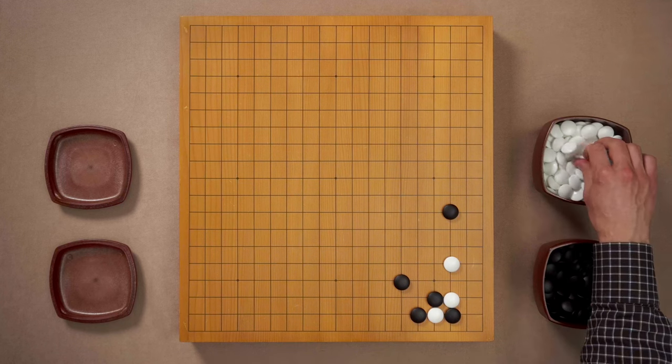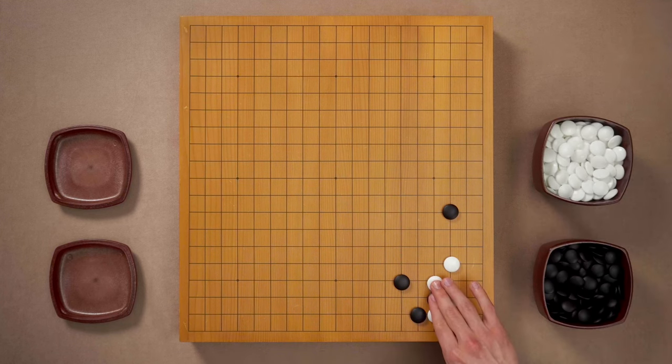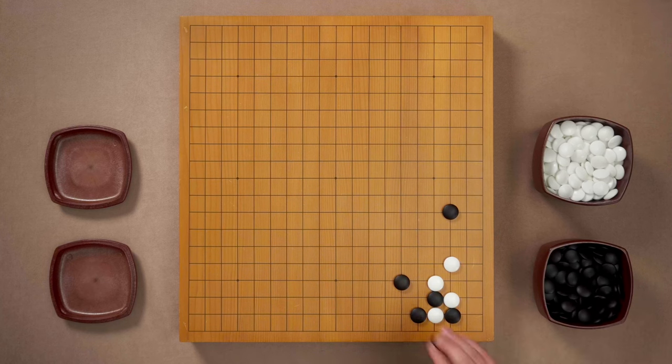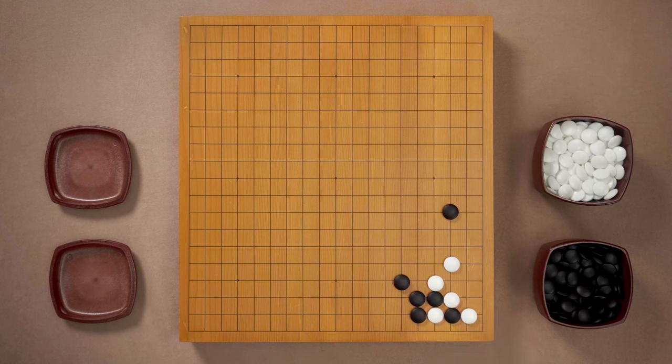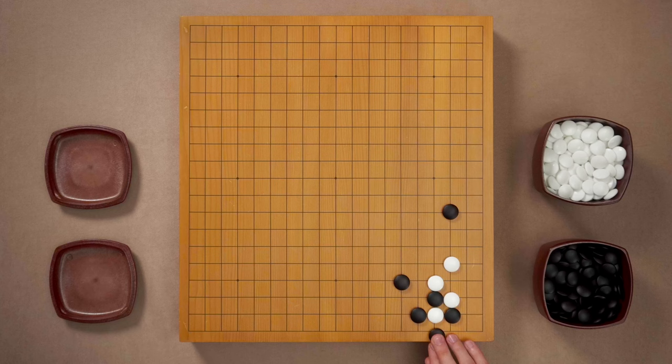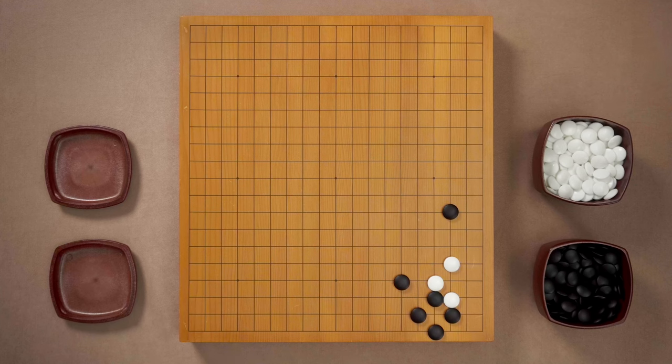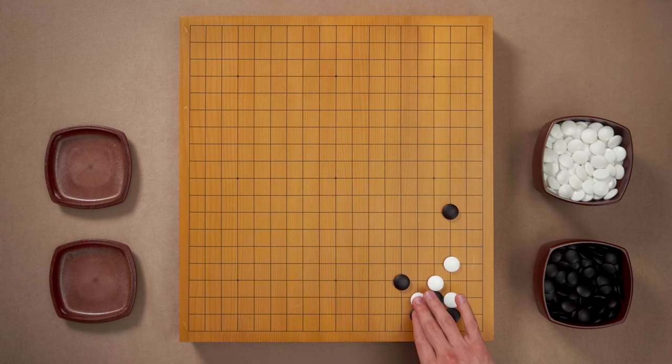And yes black could capture white. However then white can atari from the outside and if black connects white will atari again and get the corner. So black's correct decision is to capture white stone. And then can you guess the proper next move of white? Yeah don't be afraid of a ko. Play this atari and provoke black to start it.